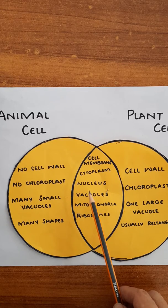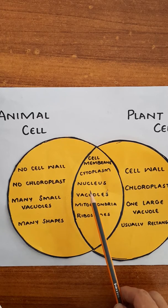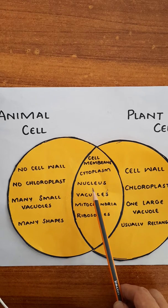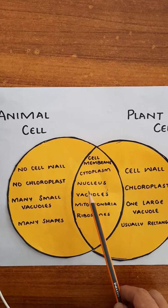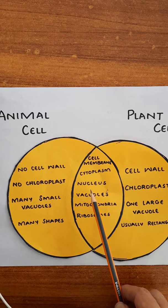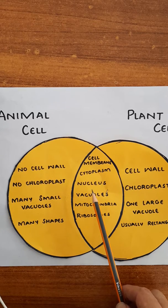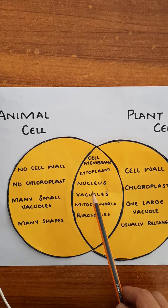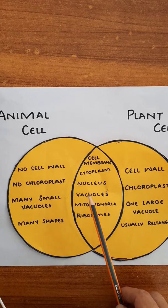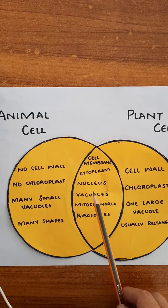Out of these organelles, the nucleus is the part present in both animal and plant cells. The nucleus is the control center of the cell — it controls all the activities going on inside the cell. It also contains DNA, which holds the hereditary material.